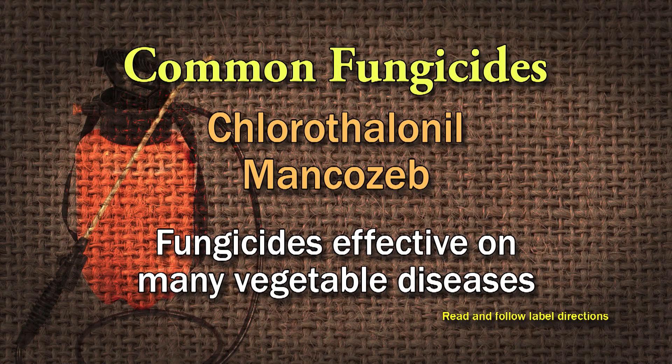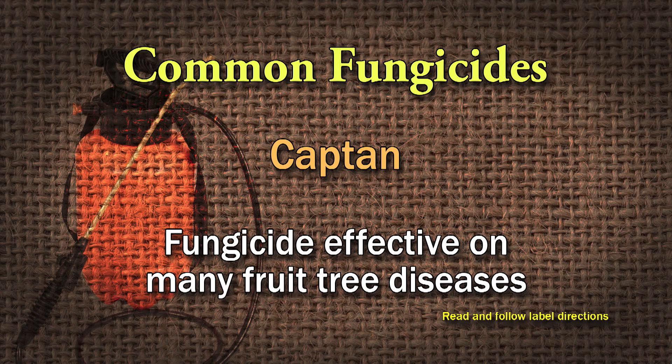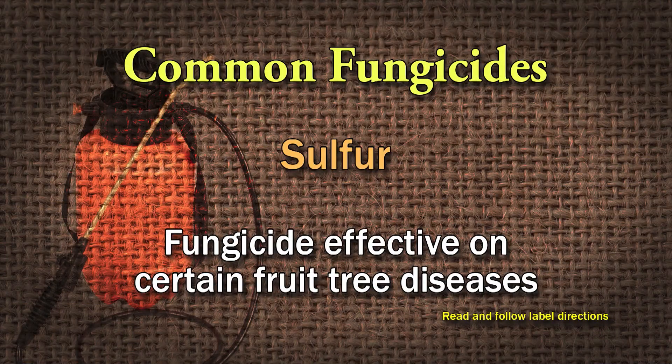Chlorothalonil and mancozeb are two very common fungicides you will often see recommended for vegetable diseases — tomato blight, early blight, leaf spot, rust, and things like that affecting vegetables. Captan is probably the most widely recommended fungicide for fruit trees, covering brown rot on peaches, black rot on apples, flyspeck, and many common diseases on apples. Captan is the most common ingredient in home orchard sprays. Sulfur is a biological fungicide also commonly recommended for fruits — leaf spots, brown rot, and even black rot on grapes.